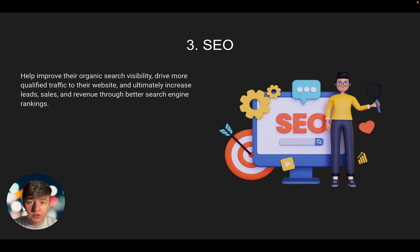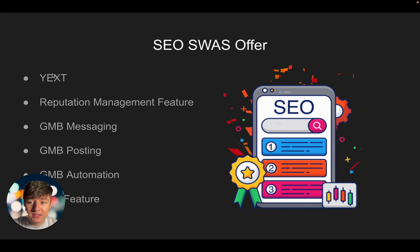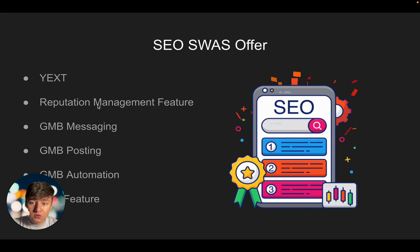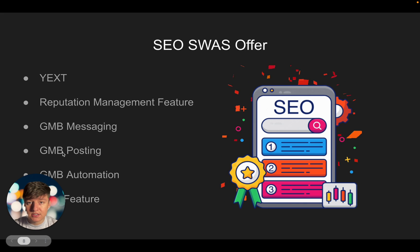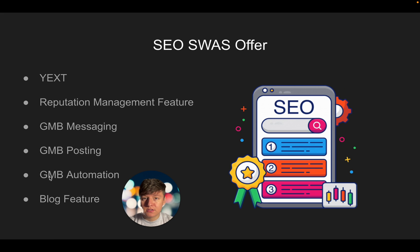The third service is SEO, which helps clients improve organic search visibility, drive qualified traffic, and increase leads and revenue. On top of your regular SEO service, Go High Level has features to boost SEO: the Listings feature gets the business listed on multiple platforms with consistent information to help them rank higher; Reputation Management helps them collect Google reviews, rewarding them in search rankings; Google My Business messaging shows Google the business is engaged with customers; and GMB posting keeps them active on their listing.